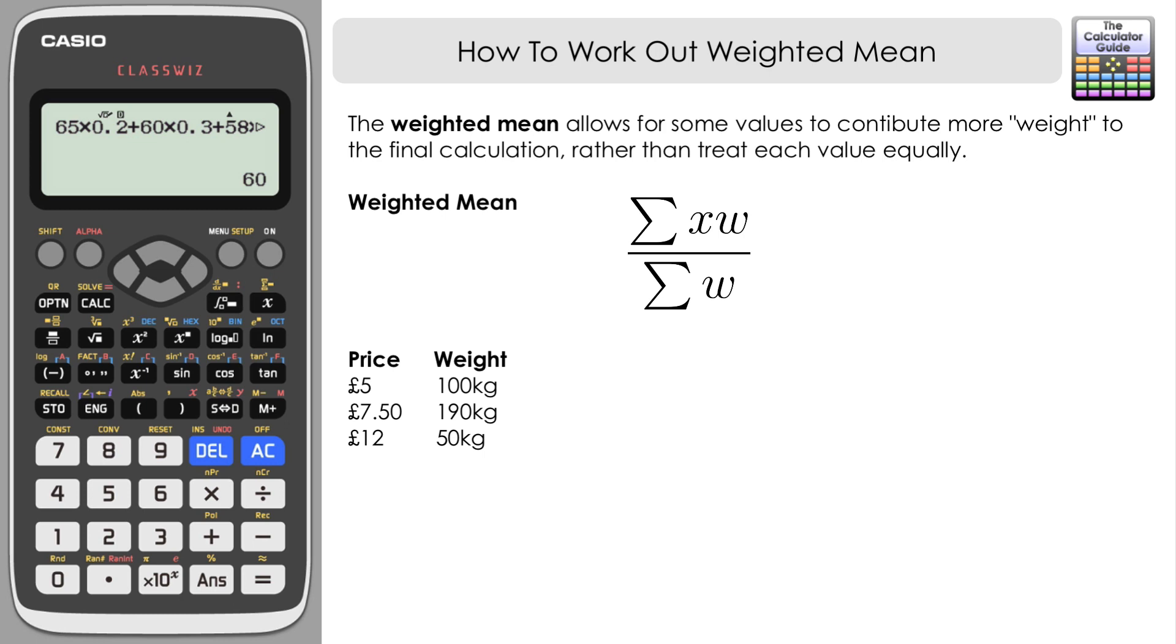We've got 100 kilograms sold of the £5 item, 190 kilograms sold of the £7.50 item, and 50 kilograms sold of the £12 item. Clearly we can see that there's less of the higher end, the most expensive version of our item that's sold, and we've sold the most of the middle product, then the cheapest product, and then the most expensive product.